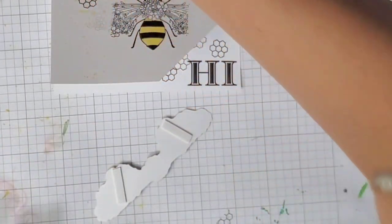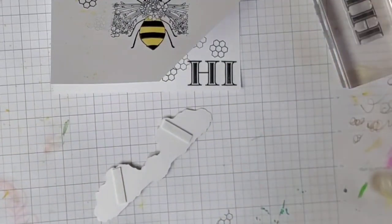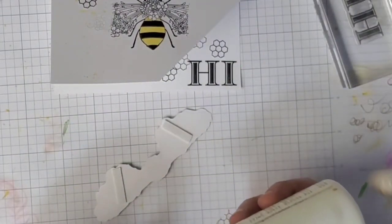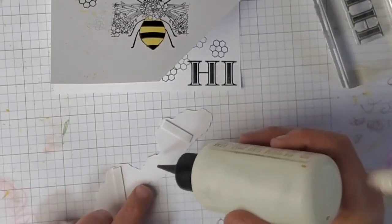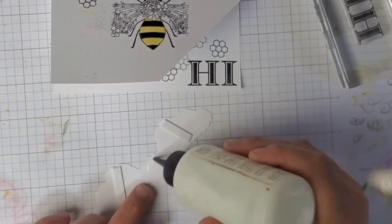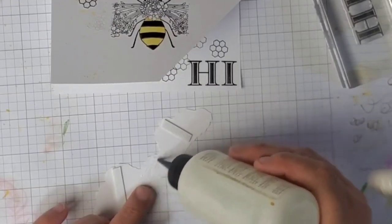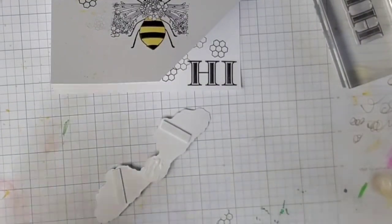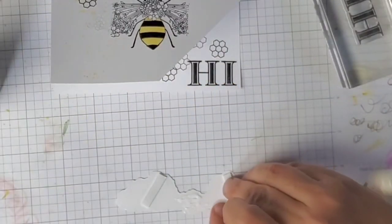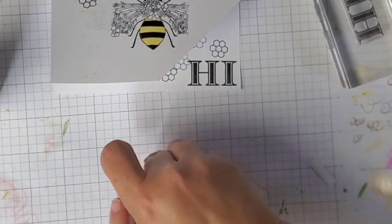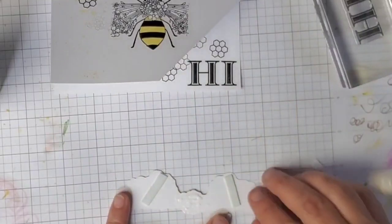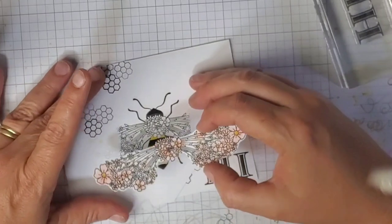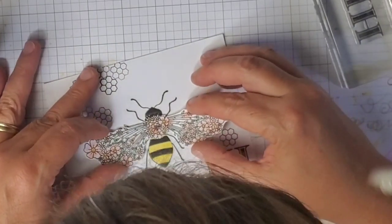Okay, I'm using liquid adhesive again because my tape runner's out. It's probably too much. I'm just going to make my paper warp. I'm going to take the paint off like that.